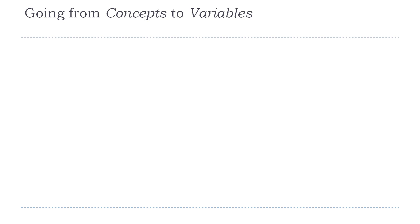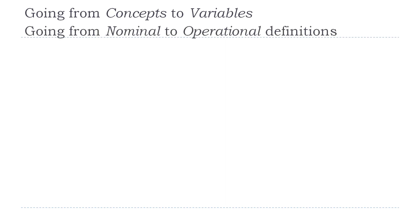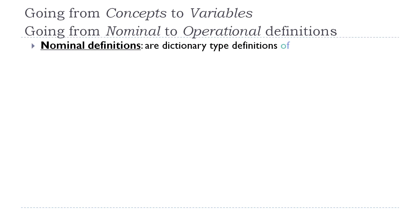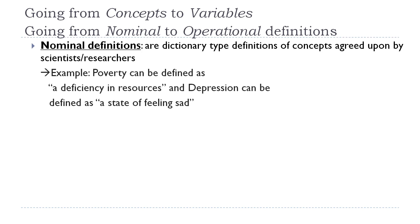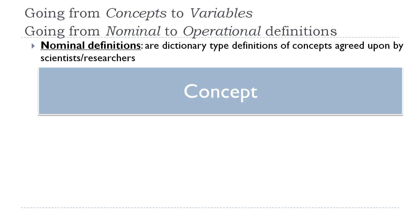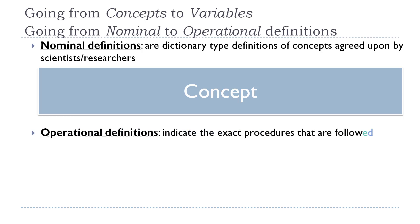What we're talking about here is understanding how we go from concepts to variables that measure those concepts. This process is called going from nominal to operational definitions. Nominal definitions are dictionary-type definitions of concepts agreed upon by scientists, researchers, and the general public — something you'd find in the dictionary. For example, poverty can be defined as a deficiency in resources, and depression as a state of feeling sad. But these definitions don't offer us a way to actually measure the concepts.